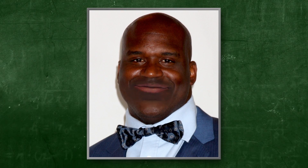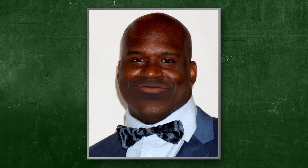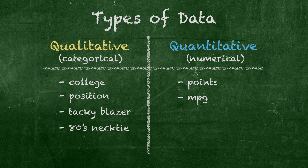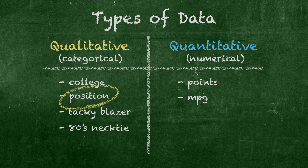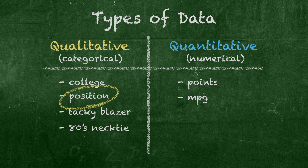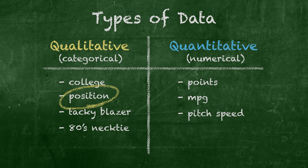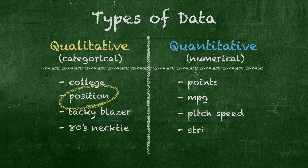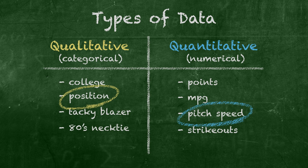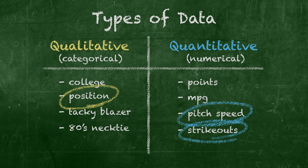When you're thinking about how to classify any data, just ask yourself this: is the data value a description or a number? A baseball player's position, like pitcher or catcher, is grouped in a category and therefore is qualitative. But the speed a pitcher throws is actually measured, and how many batters he strikes out is counted. Measured and counted data are numerical, and therefore quantitative.